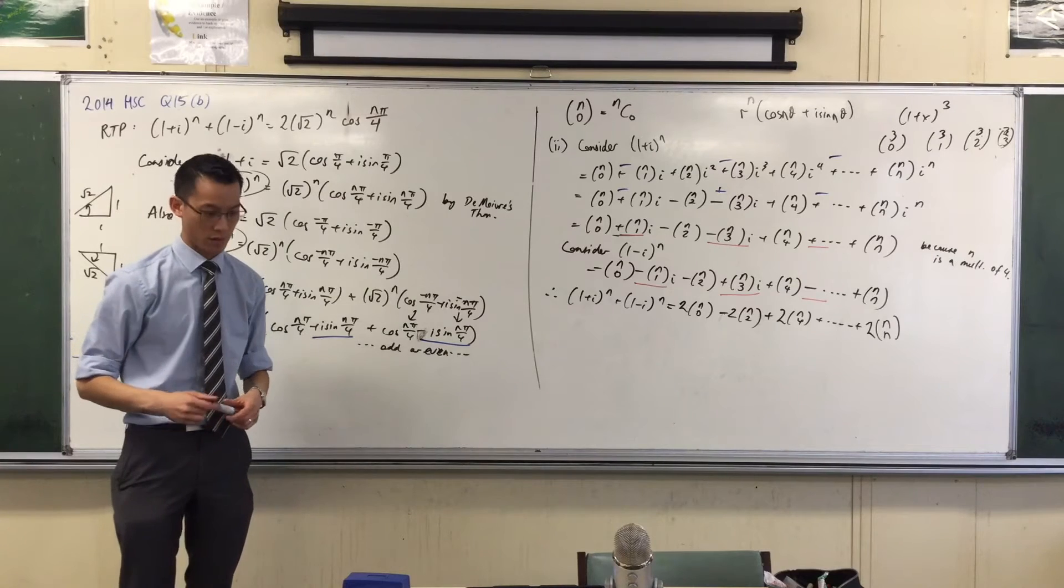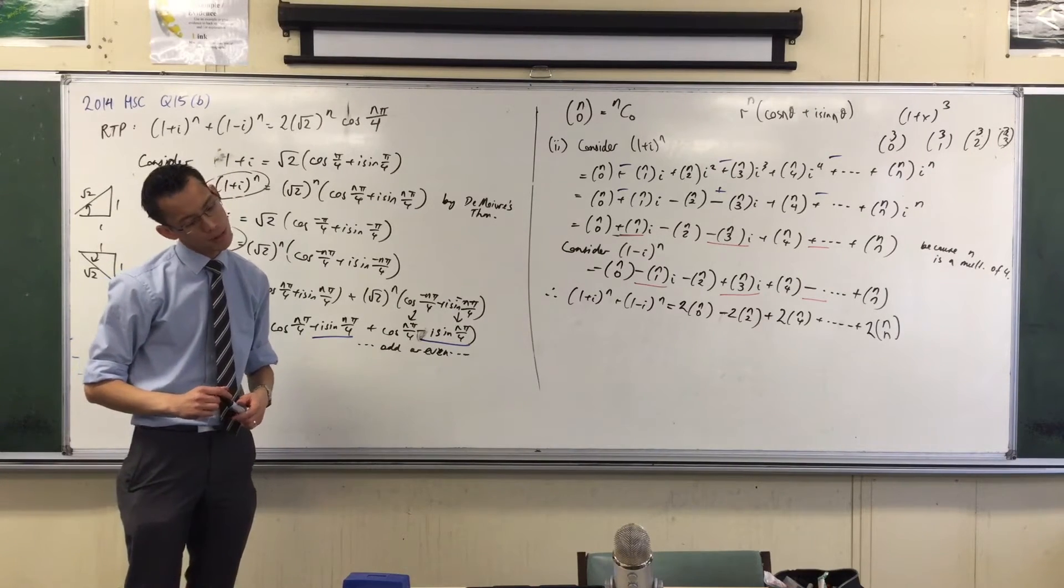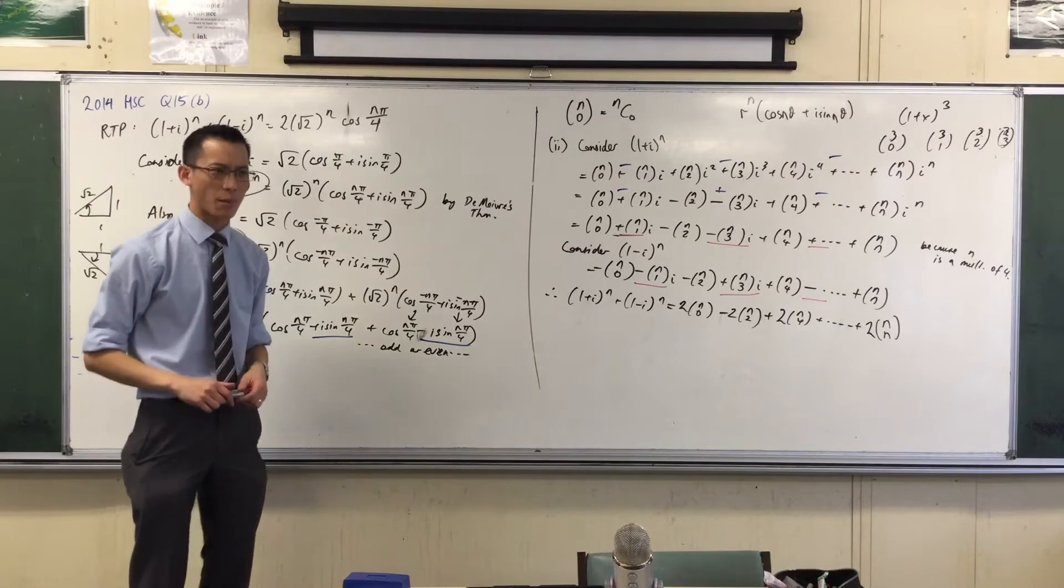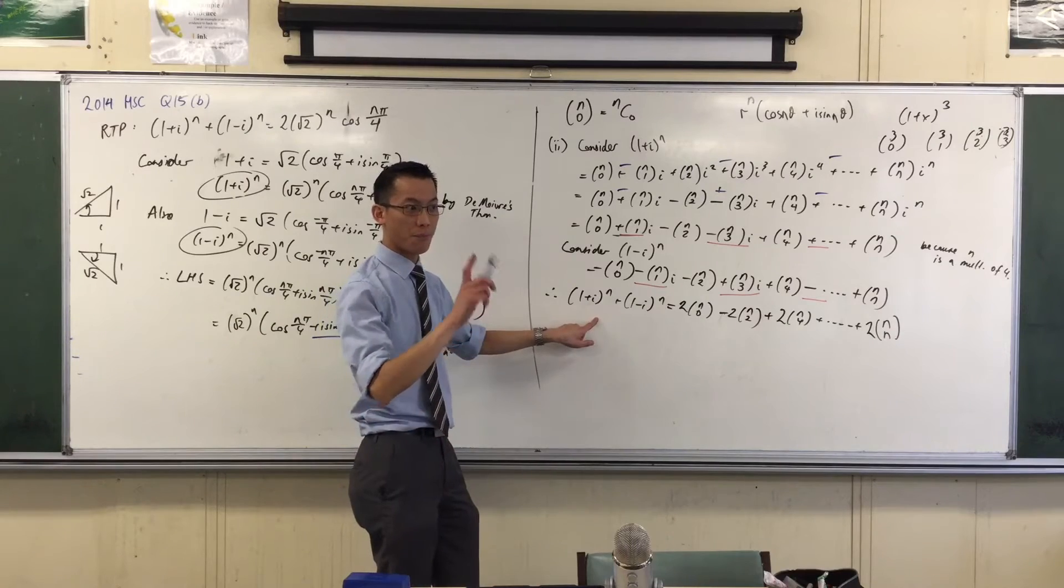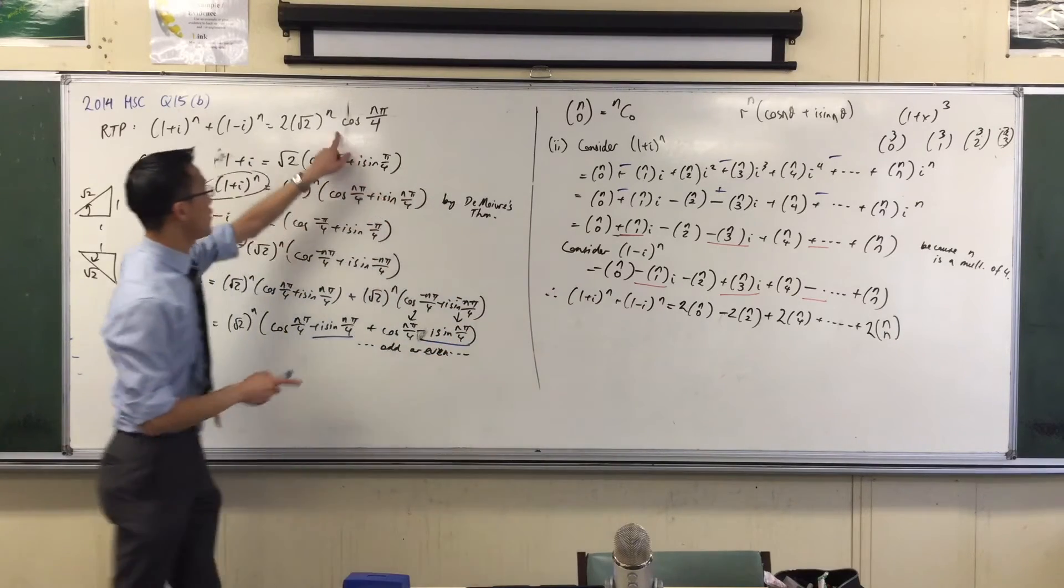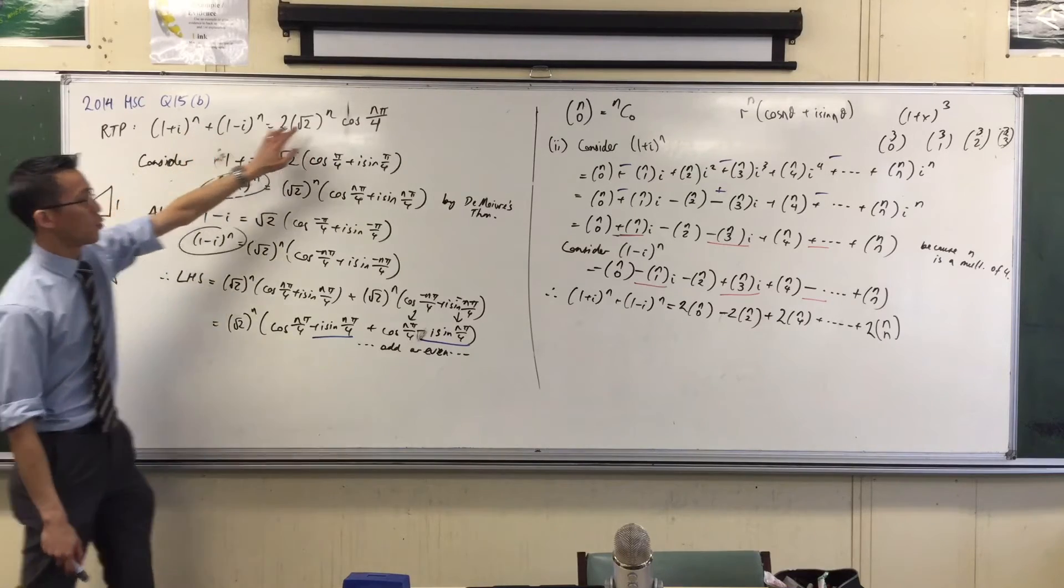Look at the result you're trying to prove. Look at the result you're trying to prove. What's on that right-hand side? What's that root 2? Where'd that come from? I don't have any root 2's here. Where's the root 2 from? Aha! Yeah, it's because I did this fancy De Moivre's theorem thing, right?